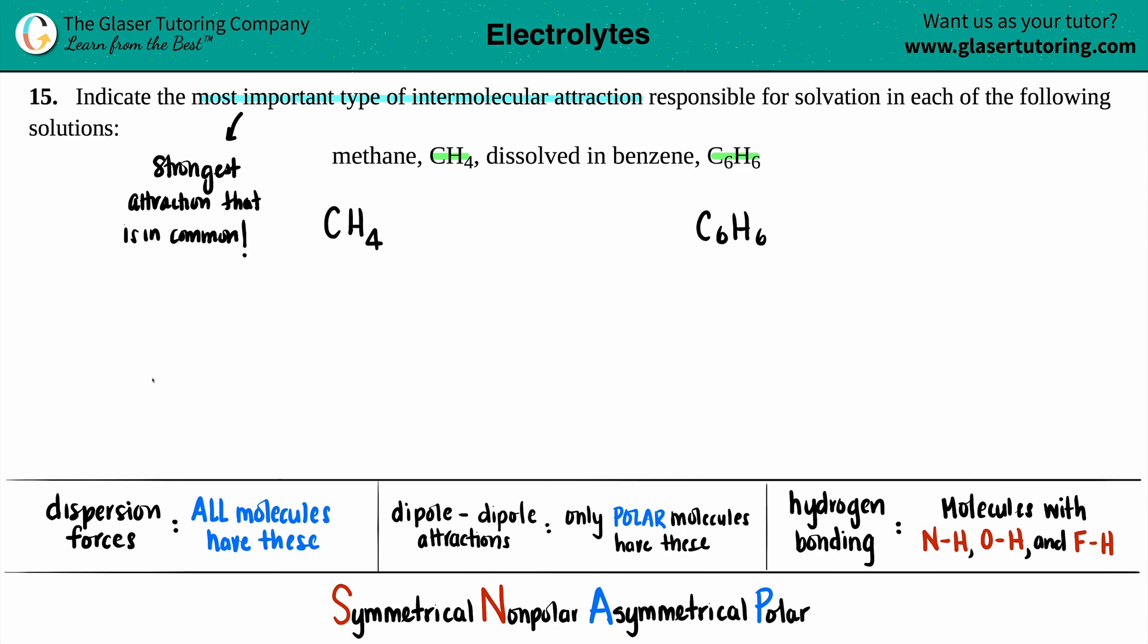On this list, dispersion, dipole-dipole, hydrogen bonding—just know that dispersion forces are the weakest intermolecular attraction because there's nothing special about them. All molecules have dispersion forces. And as you go up, you get more specific. Hydrogen bonding is the strongest intermolecular attraction. If both molecules had hydrogen bonding, that would be the most important type, because the most important type is the strongest one they have in common.